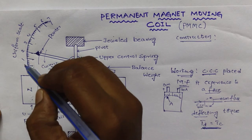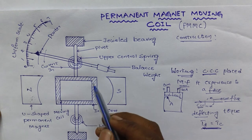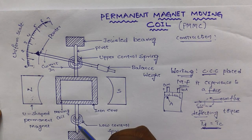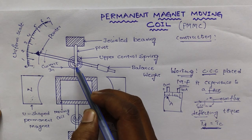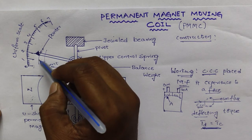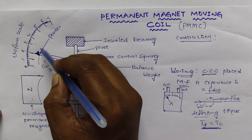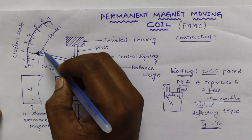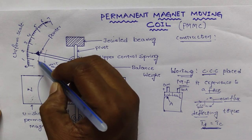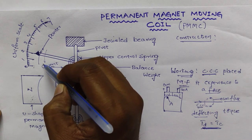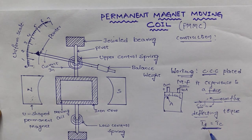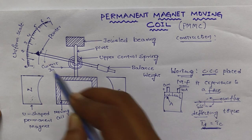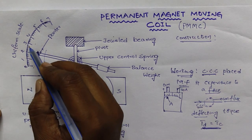When the pointer stops, that is here the two springs, as I said before, the two springs provide controlling torque. Now, deflecting torque is in one position, that is moving from one to another. Here, exactly the deflecting torque is opposite to the controlling torque. When these two are equal, deflecting torque is equal to the controlling torque, then the pointer stops at some reading.